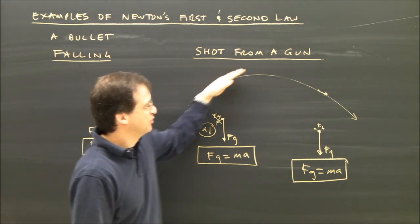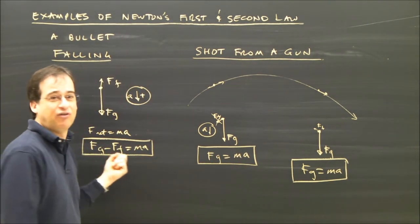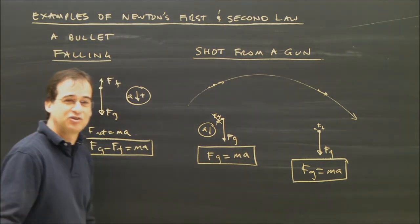So yeah, a projectile that's moving across in an arc like that really only has gravity on it. It's very similar to when it's just falling. Let's try a few more.